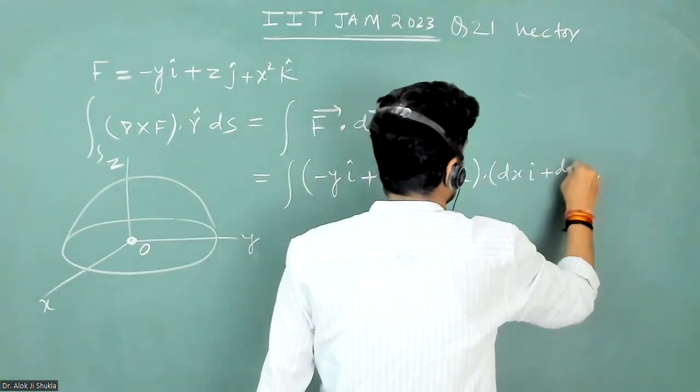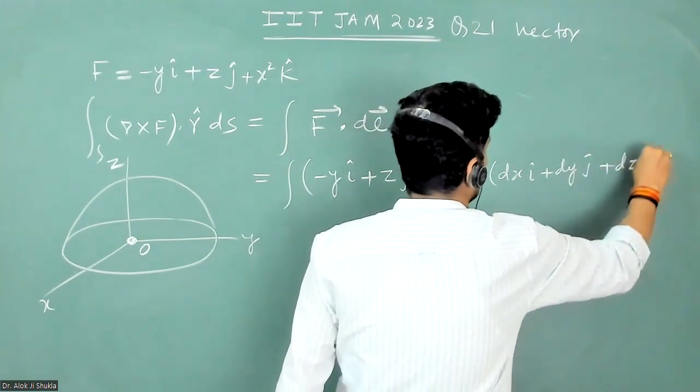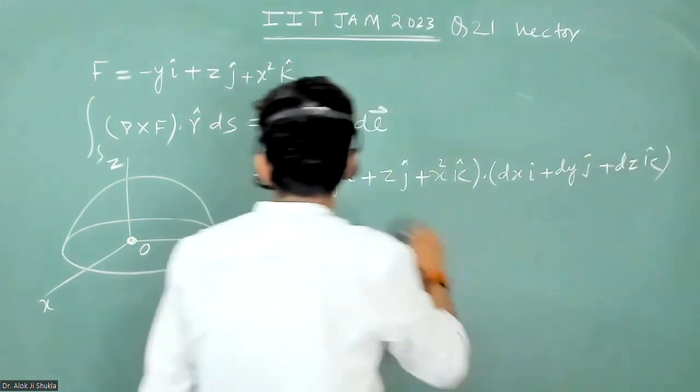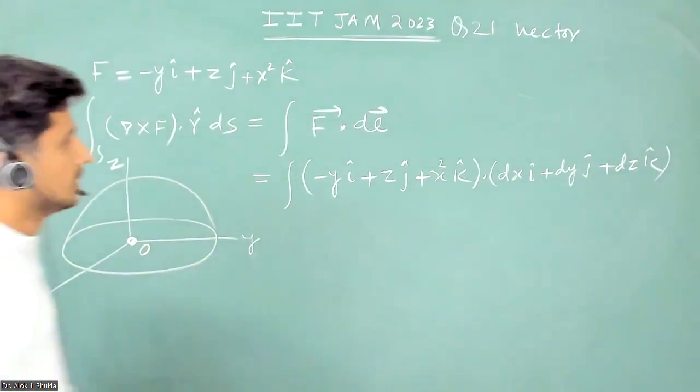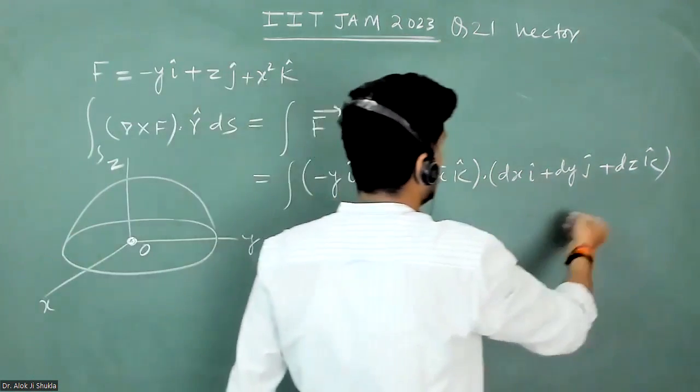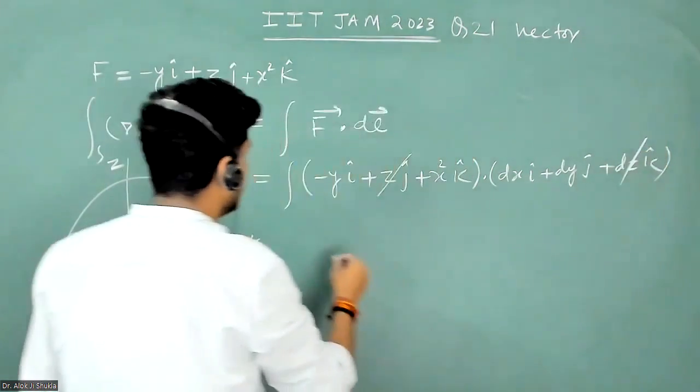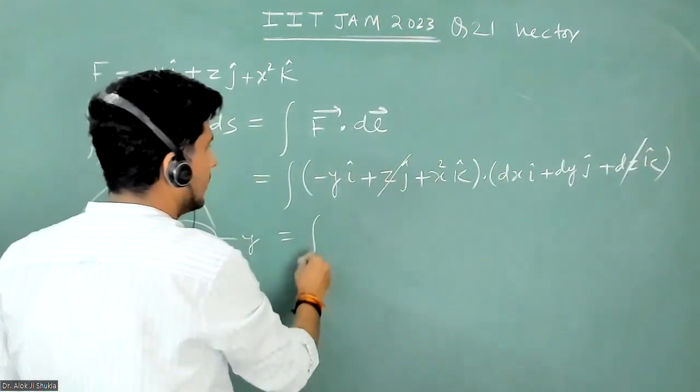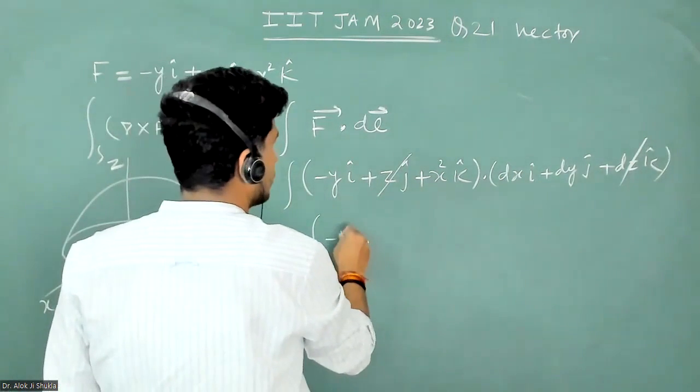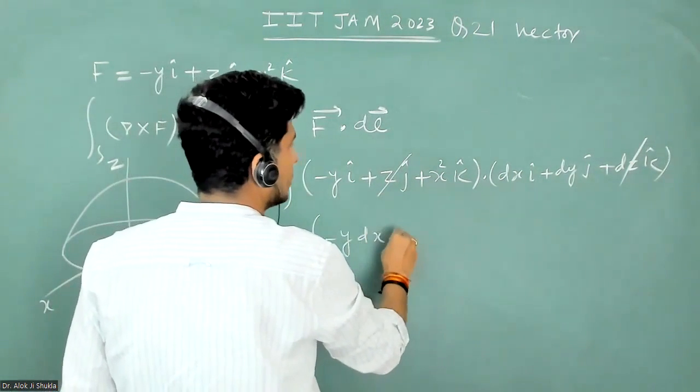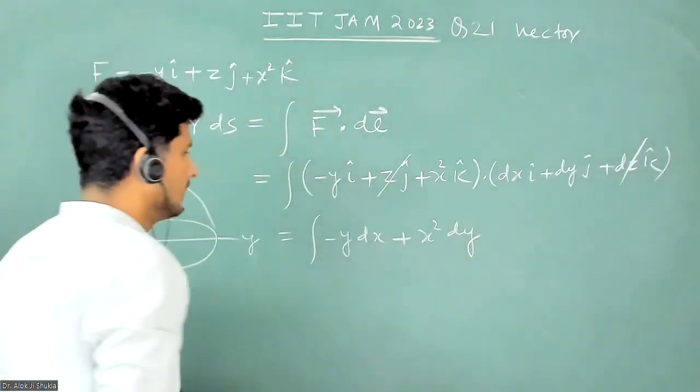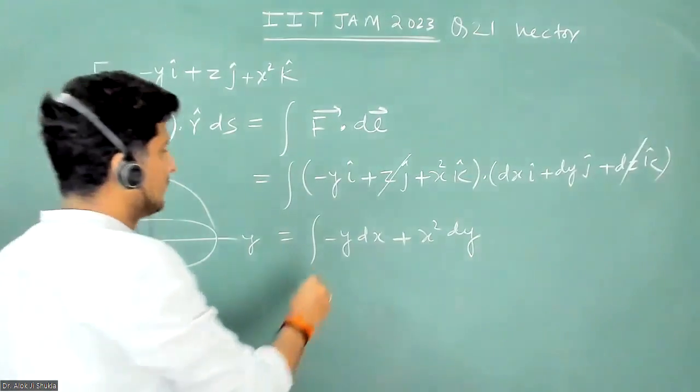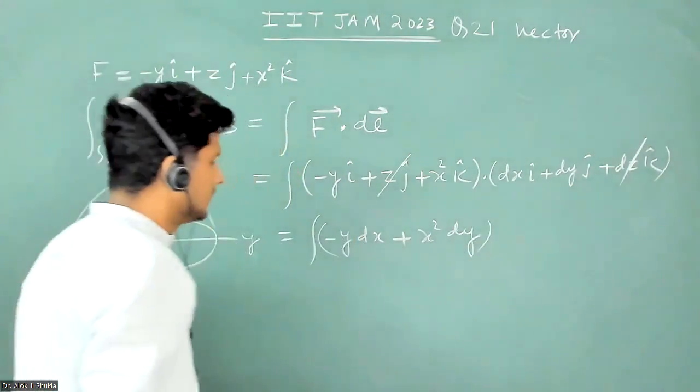cap plus dy j cap plus dz k cap. But since we are on the xy plane, z will be equal to 0, so we can just remove the z term from here. And now we will get minus y dx plus x square dy. So this integral we have to calculate.